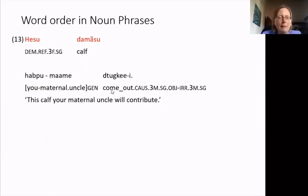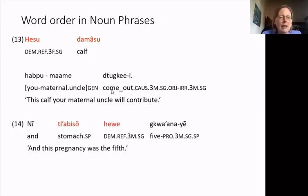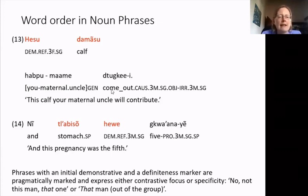Demonstrative order is more flexible. The demonstrative can precede the noun, as in example thirteen: 'This calf.' But it's also possible to have the reverse order, as in: 'And this pregnancy — this stomach literally — was the fifth.' Sander Steyman investigated the reason for this variation and found that phrases with an initial demonstrative and a definiteness marker are pragmatically marked, expressing either contrastive focus or specificity — 'not this man, that one' or 'that man out of the group.' In example thirteen, the implication is perhaps that there were other calves being contributed by other relatives.